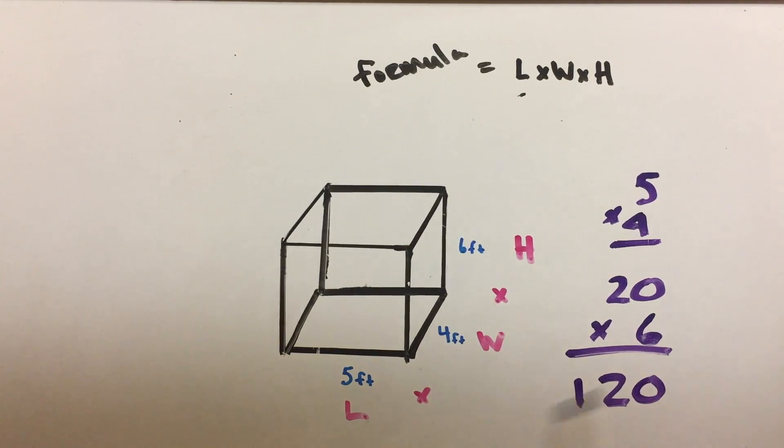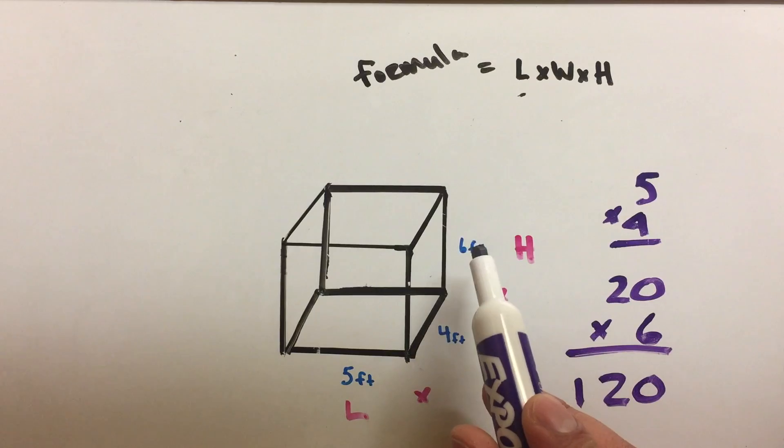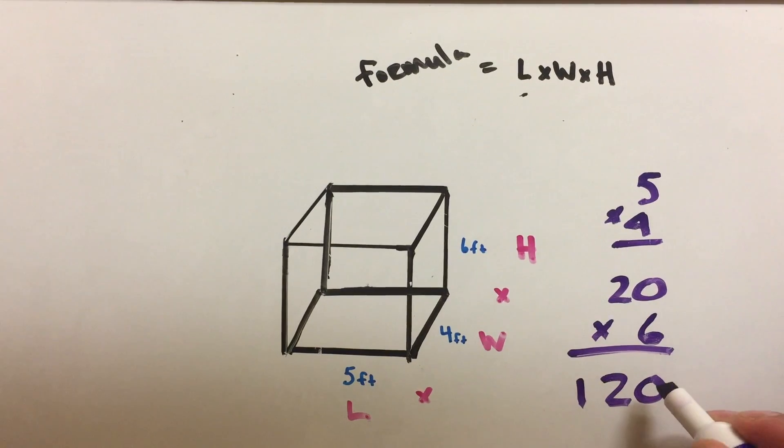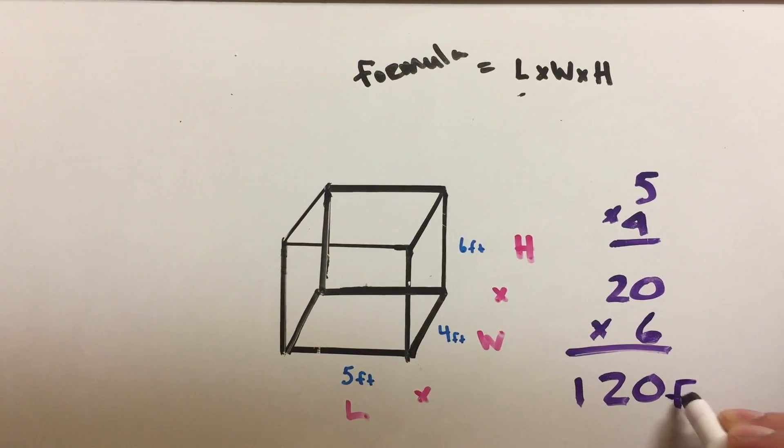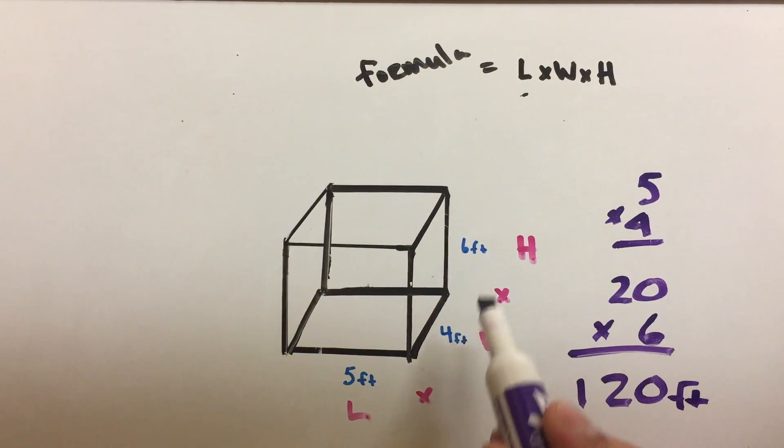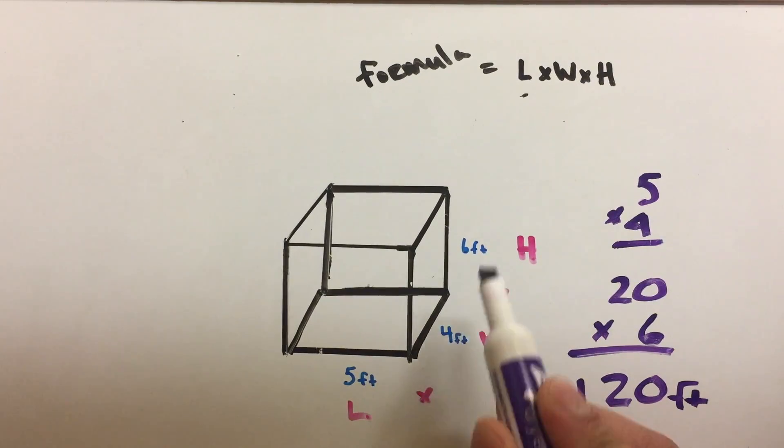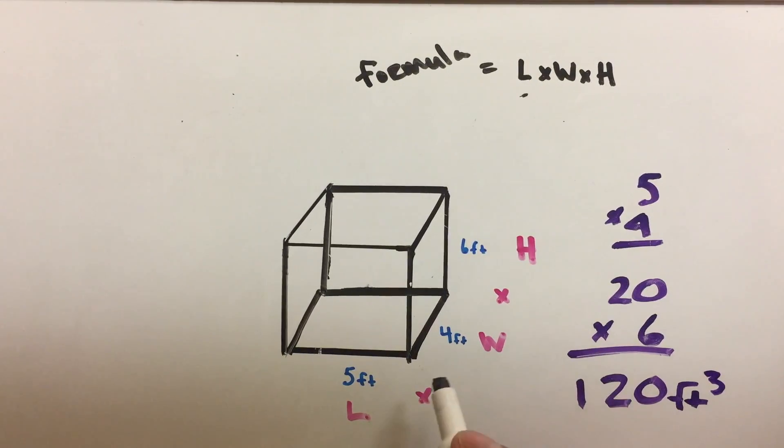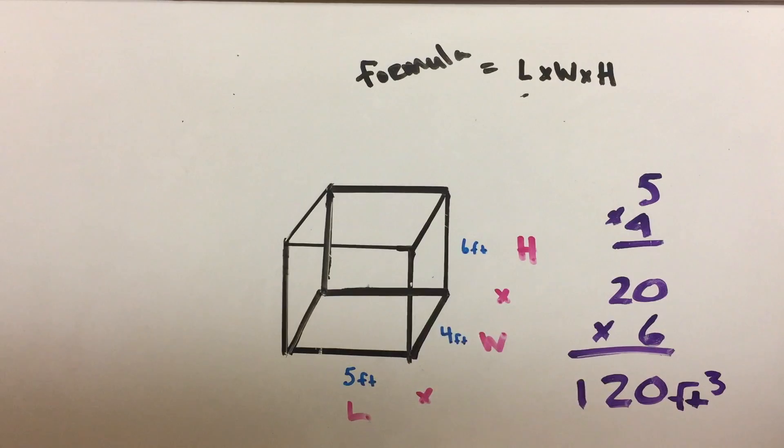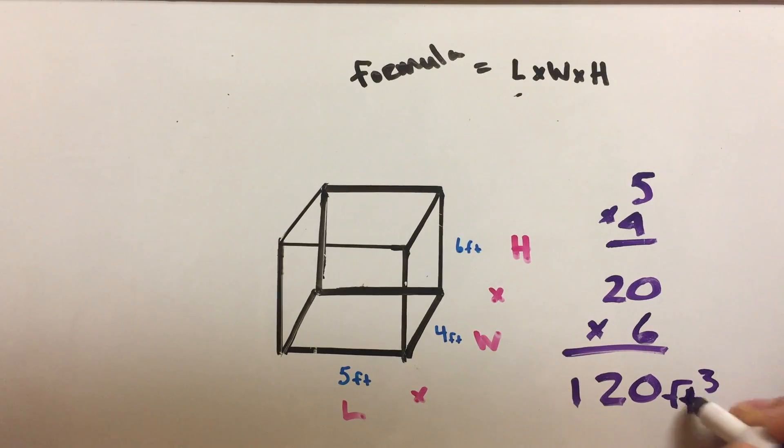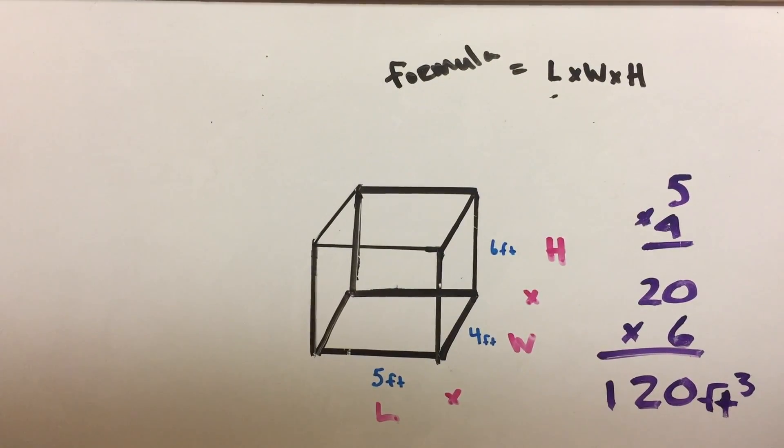But we're not done yet. Do you see the unit of measure here? That is feet. So don't forget your unit of measure, which is feet: 120 feet. But one last thing: there's three, there's one foot, two foot, three foot. So you need to put a little three here, knowing that your unit of measure is a 3D cube or 3D box. Very important, you cannot forget that little guy right there, the little three. So 120 feet cubed is our answer for this problem.